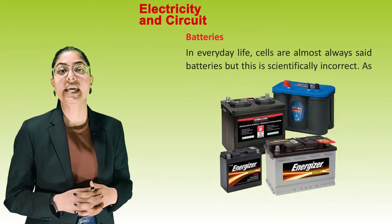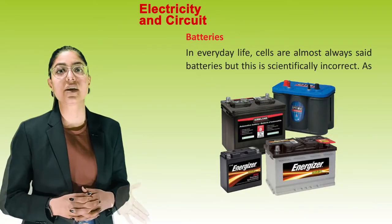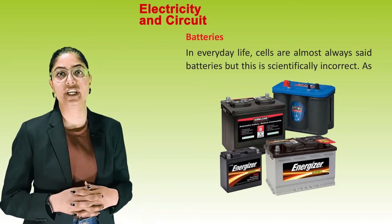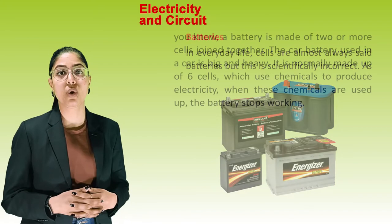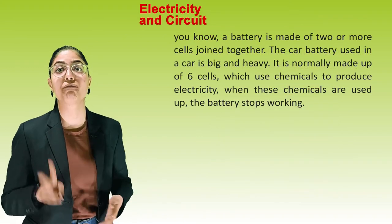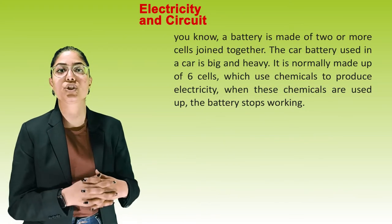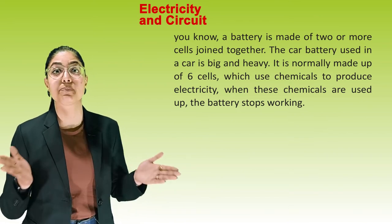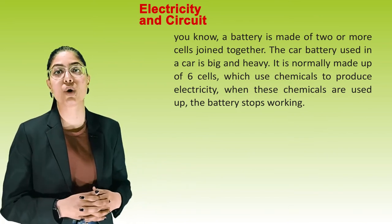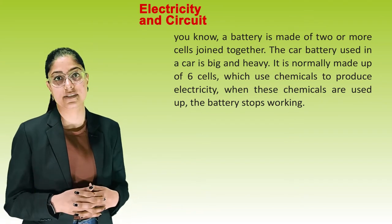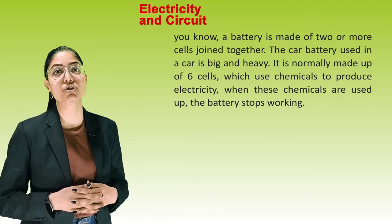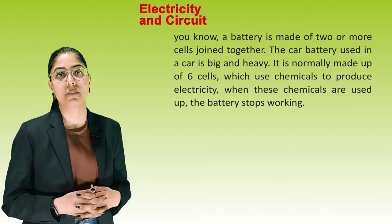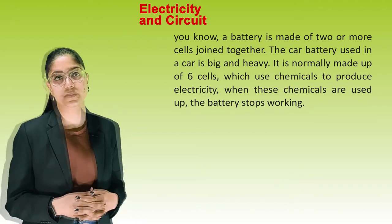Next is batteries. In everyday life, cells are almost always called batteries, but this is scientifically incorrect. A battery is made up of two or more cells joined together. The car battery is big and heavy and is normally made up of six cells which use chemicals to produce electricity. When these chemicals are used up, the battery stops working.